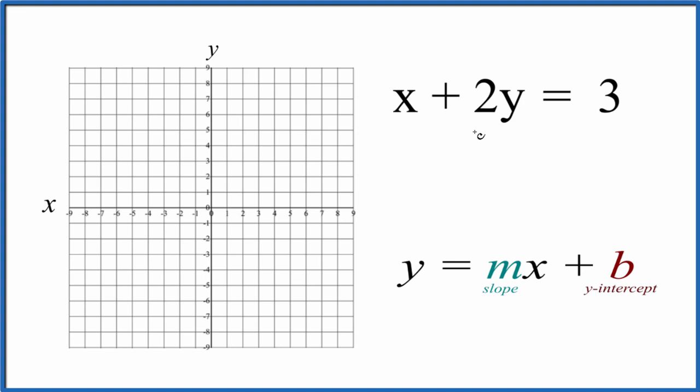So what we need to do is rearrange the equation x plus 2y equals 3 so that we have y all by itself. Why don't we subtract x from both sides? That'll give us... And then since we have the x first here in slope-intercept form, let's switch these two here.